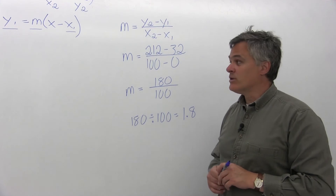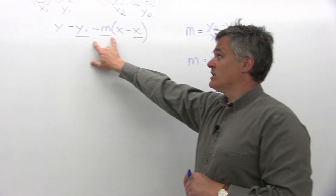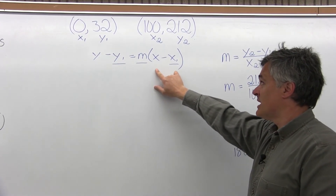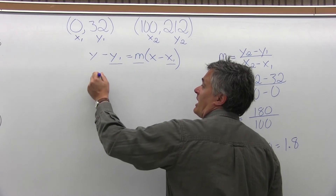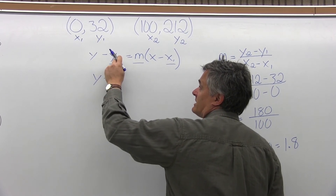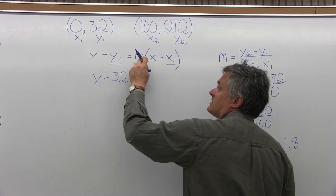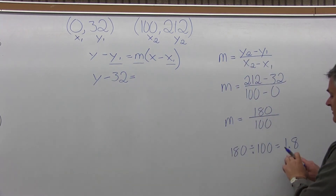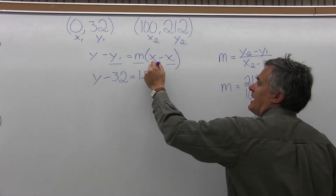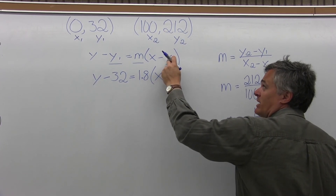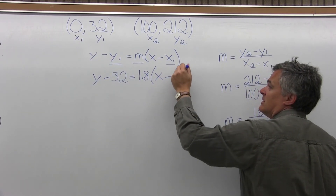1.8 is probably the easiest to work with. Now that I know the slope, I go back to the formula y minus y1 equals m times x minus x1 and fill in the parts that need a number value. y1 is 32, so it's y minus 32 equals. m is 1.8, so times 1.8, and then in parentheses x minus x1, where x1 is 0. Close the parentheses.